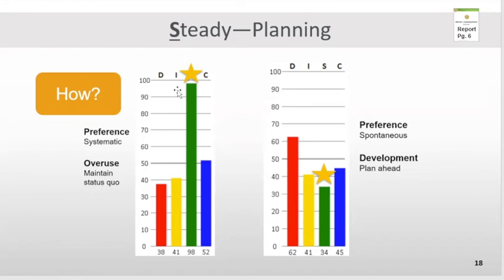So there's the strengths and the liabilities. Now, you ask, what about if someone has an S below the energy line? Great question. Their preference when it comes to planning is more that spontaneous approach.